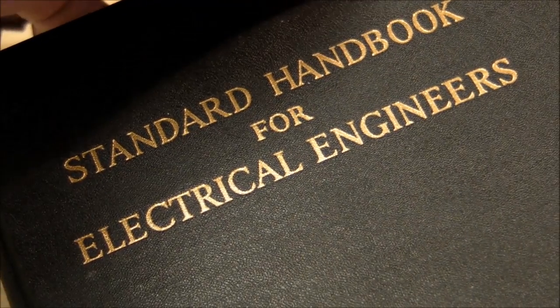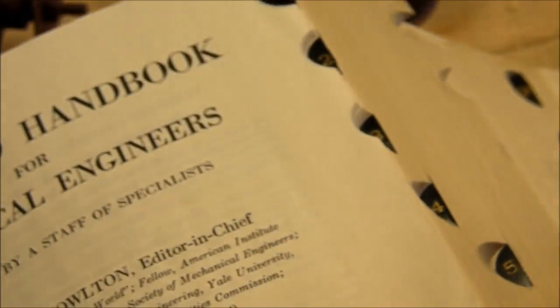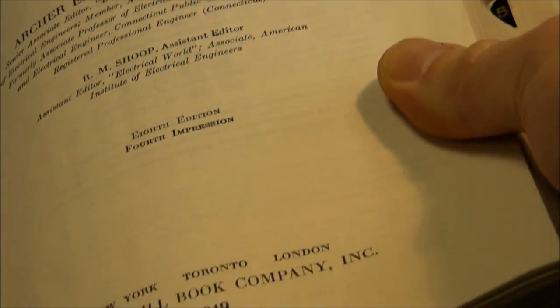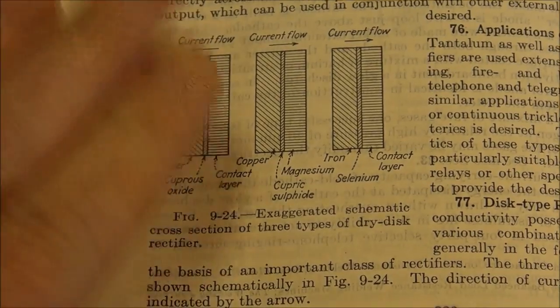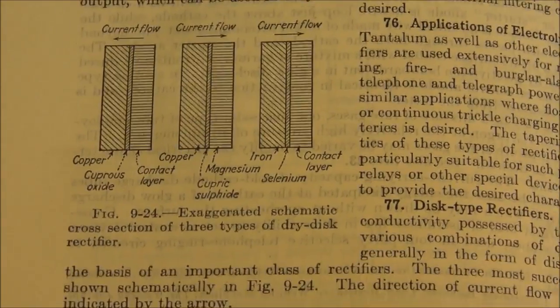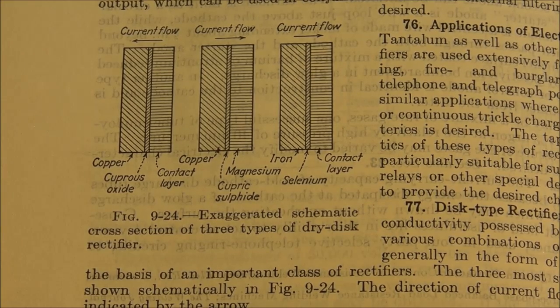So I have this standard handbook for electrical engineers. The copyright date is 1949. It's got lots of cool stuff. It's always good to have a really old textbook like this so you can learn the basics of electronics from back in the day.